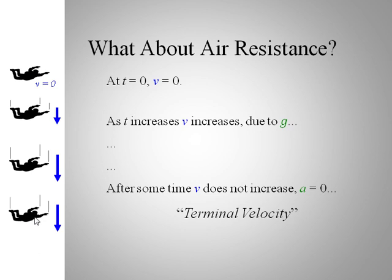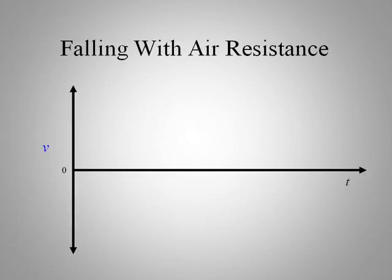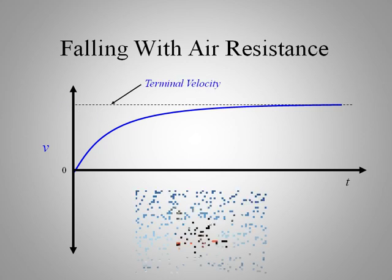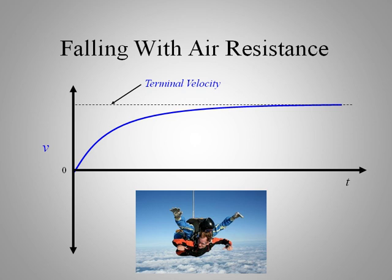That condition is called terminal velocity. On a velocity-time graph, the object initially accelerates, but then reaches a constant velocity — giving an asymptotic curve that levels off at a maximum value. That maximum value is the terminal velocity. For a skydiver, terminal velocity is roughly 100 to 120 miles per hour, depending on their size.